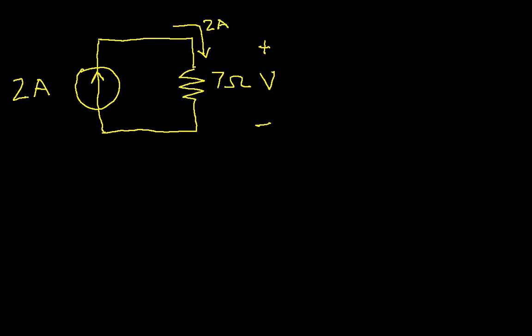How do we know that? Well, this current source will do whatever it has to to make sure that 2 amps goes out of it, and then 2 amps comes back in. So if 2 amps are leaving the current source, the only path that it has to follow is through the resistor and back around to the current source. So basically, we know that the current through this resistor is 2 amps. Now we can apply Ohm's Law, and the voltage will be 2 amps times 7 ohms. This is I and this is R, which when we work it out is 14 volts.